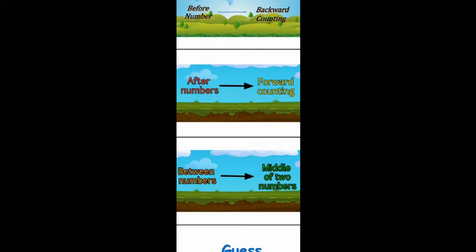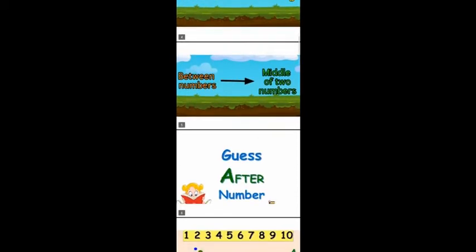So to recap: before number is backward counting, after number is forward counting. And what about between numbers? Between means the middle of the numbers — the middle number is called the between number. So today we are going to learn about after numbers and between numbers.